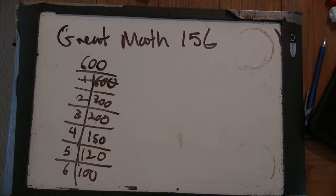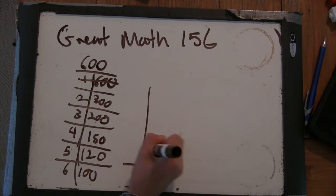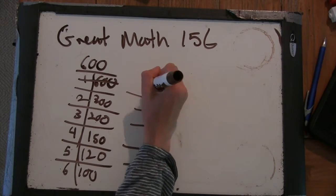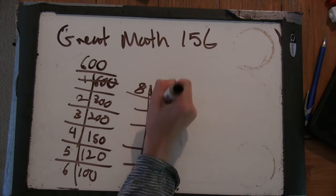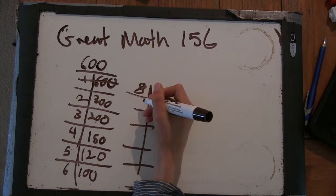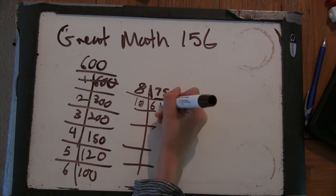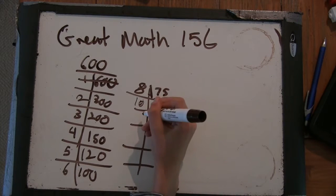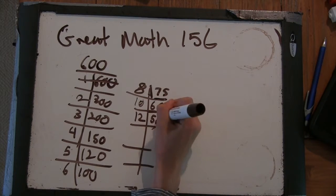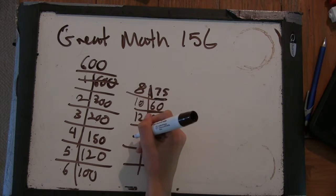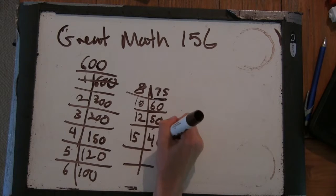It's divisible by 7? 8 and 75. 10 and 60. 12 and 50. Not 13. Not 14. 15 and 40.